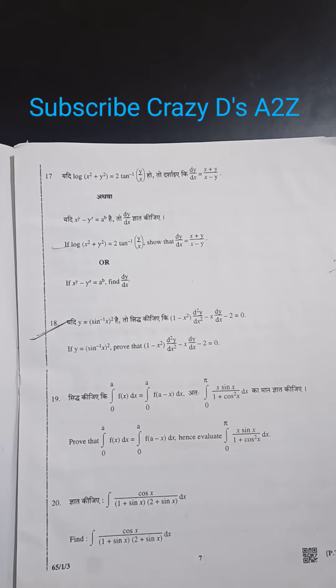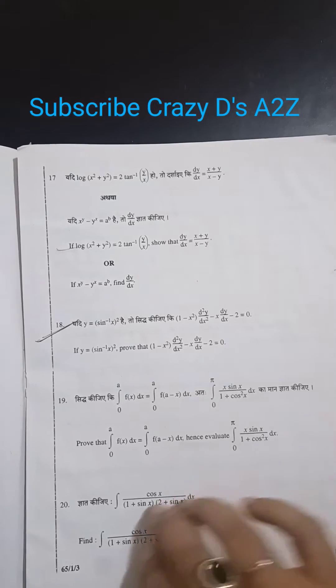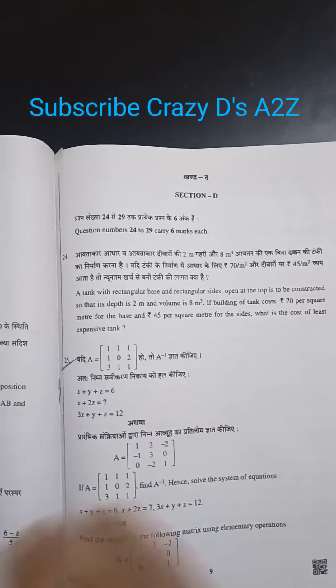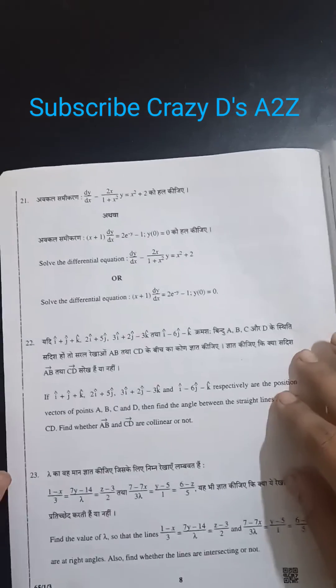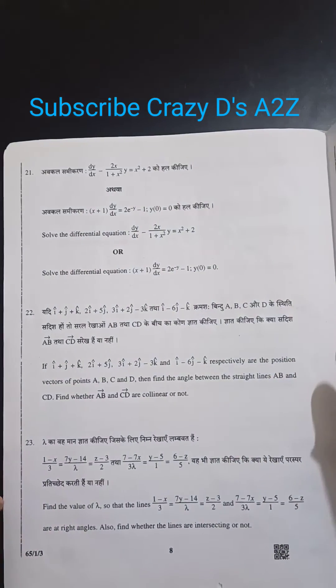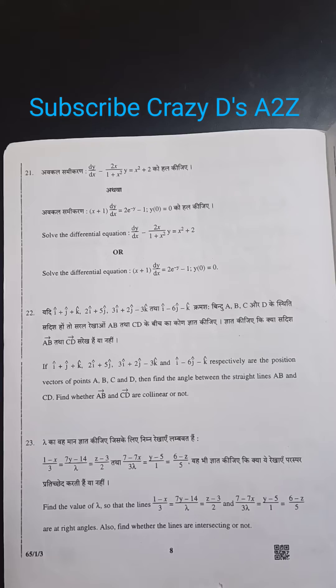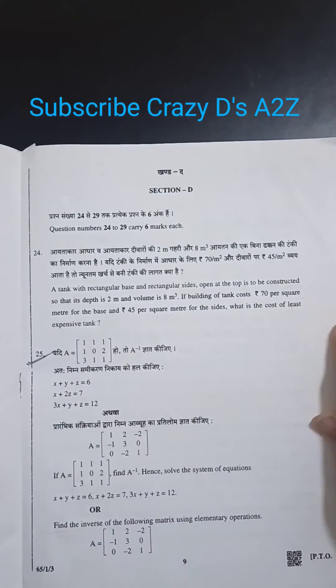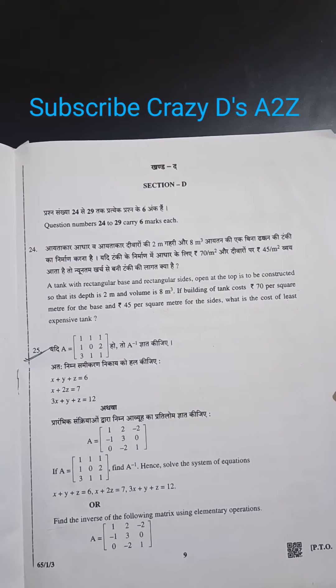Then the seventh page is having question number 17 to question number 20. This is question number 21 to 23. This is Section D where question 24 and 25 are there.